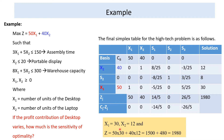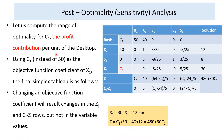Now, if the profit contribution of desktop changes — that is, if 50 changes, i.e., the coefficient of the objective function — what will happen to the optimal solution? Let's compute the range of optimality for c1. We replace the profit contribution per unit of desktop from 50 to c1. Using c1 instead of 50 as the objective function coefficient of x1, the final simplex table is as follows.